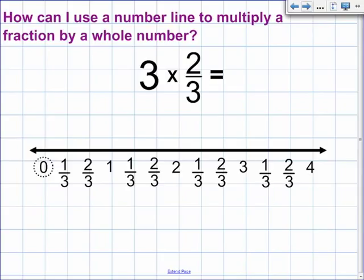For the next problem, we're going to be using a number line. Once again, we have three times two-thirds. Remember, we are multiplying two-thirds three times, which is the same thing as two-thirds plus two-thirds plus two-thirds. We start off at zero,